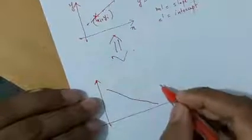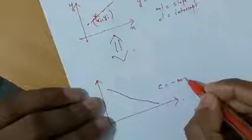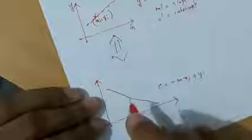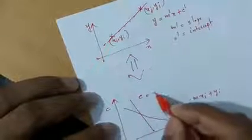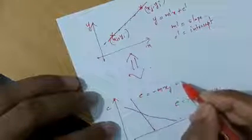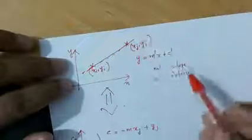For the first point, we get a straight line in the MC plane with equation c equals minus m·xi plus yi. Similarly, for the second point mapped into the MC plane, we get another straight line with equation c equals minus m·xj plus yj. We can see that there is a connecting intersection point between these two straight lines. That intersection point has the value m-dash and c-dash — the slope and intercept of the straight line connecting the two original points in the XY plane.